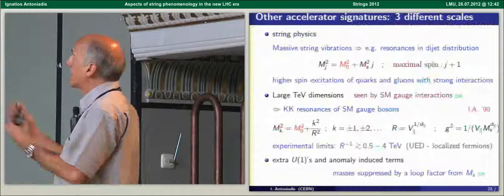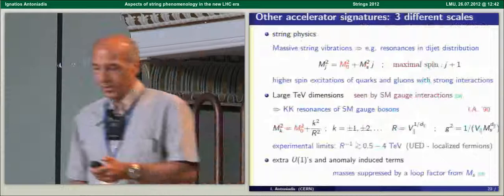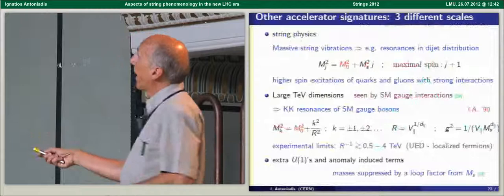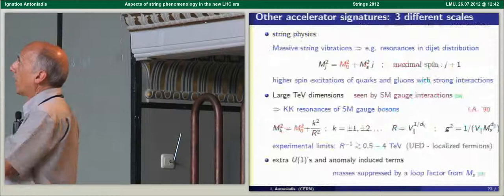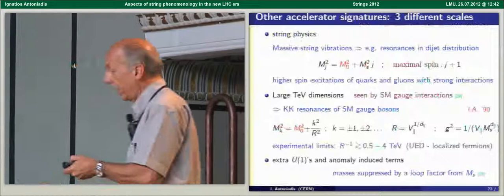One possibility is to have TeV extra dimensions, so dimensions which are a bit larger than the string scale where part of the standard model spectrum can propagate. There are many models here and the limits vary between a few hundred GeV to 4 TeV depending on how the fermions are localized. There is a quantum number or a parity at least of the Kaluza-Klein momentum which is conserved.